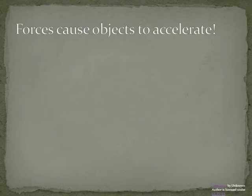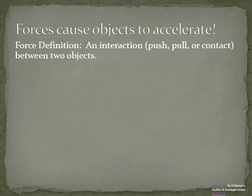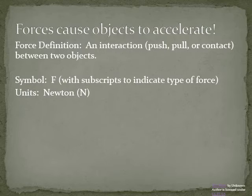Hopefully you realize that all of those methods of making the object change velocities had something in common—they were all forces. In physics we say that forces cause objects to accelerate. The definition of a force is any interaction like a push or a pull or anything touching each other in contact between two objects. We'll be using a new symbol which is a capital F to represent forces, and you'll see lots of little subscripts just like we did with energy to indicate what kinds of forces we're talking specifically about.